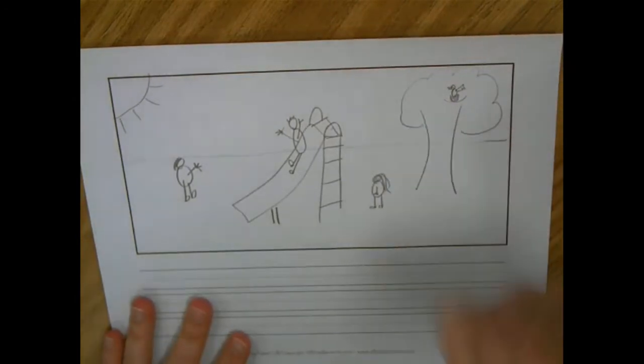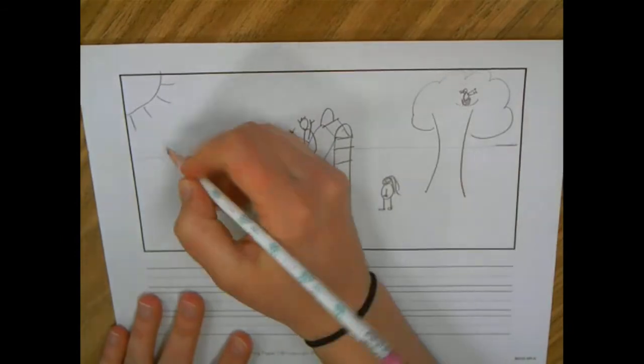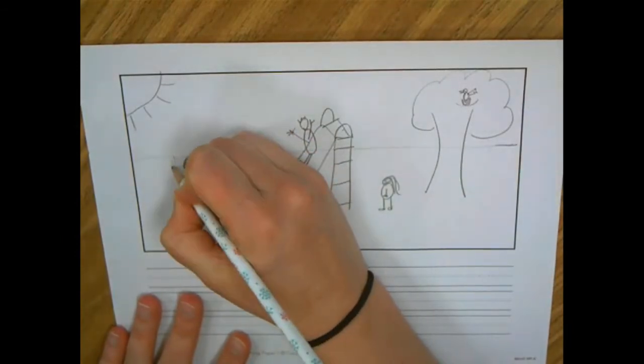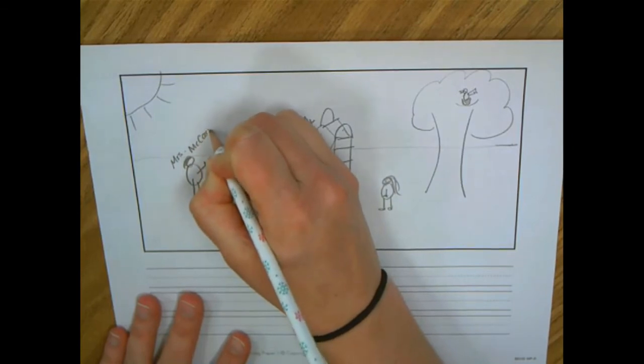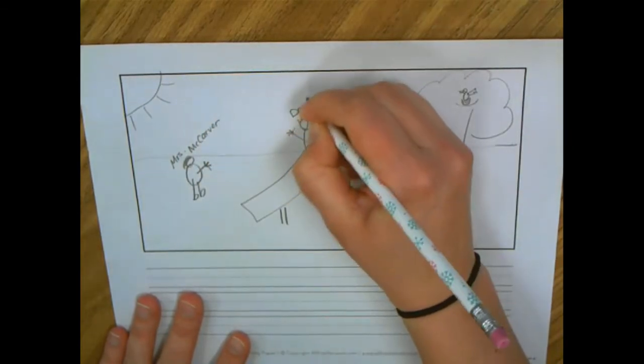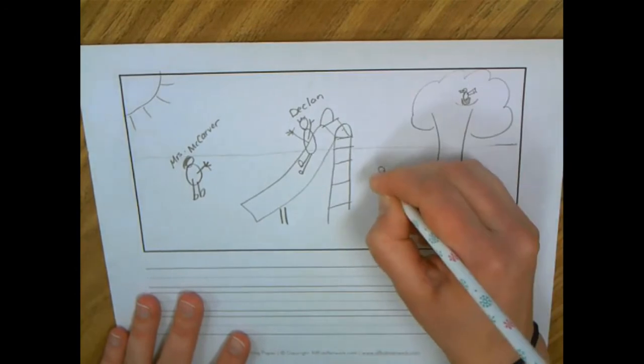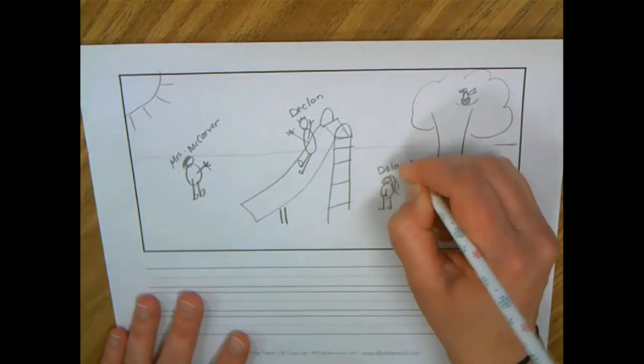So the first thing I'm going to do is start by writing words or labels I know. I know how to write my name and the names of who is there is important. So I'm going to put that on. This is my son Declan and there's my daughter Delaney. Okay.